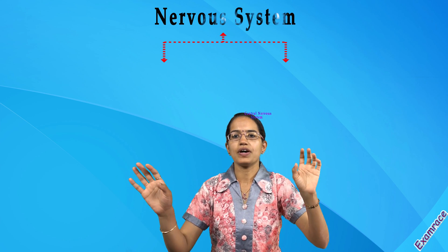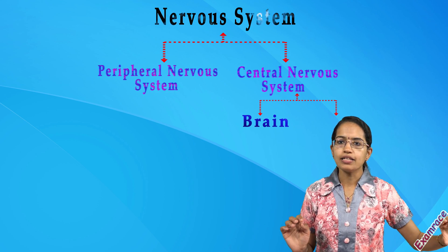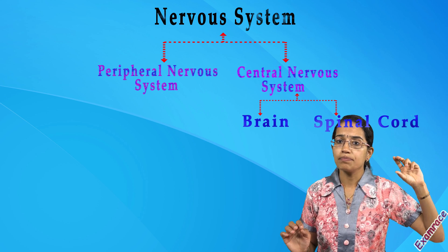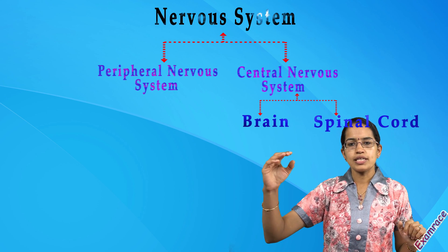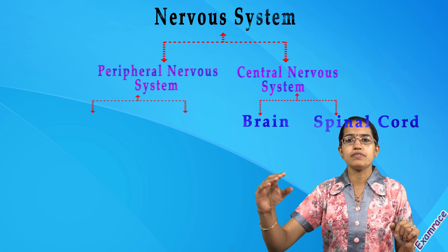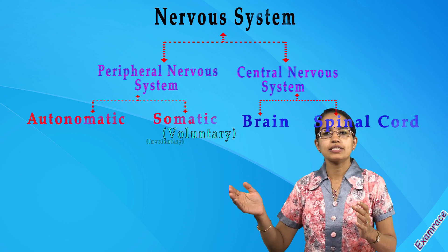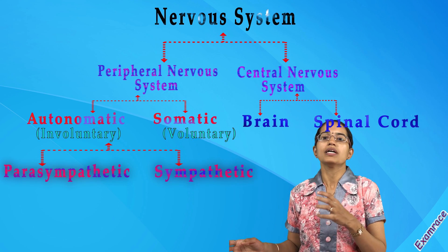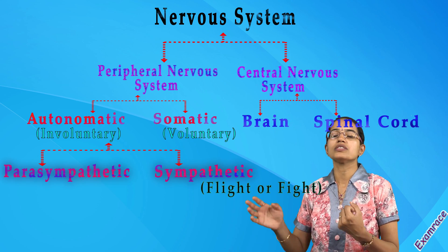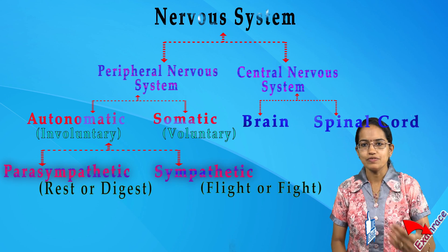A quick recap: the nervous system is classified as the central nervous system and the peripheral nervous system. The central nervous system is subdivided into the brain, which handles complex neural processing, and the spinal cord, which handles simpler tasks like reflex actions. The peripheral nervous system is subdivided into the somatic (voluntary) and autonomic (involuntary) nervous systems. The autonomic is further subdivided into the sympathetic nervous system, associated with the fight-or-flight response, and the parasympathetic nervous system, associated with rest and digest.